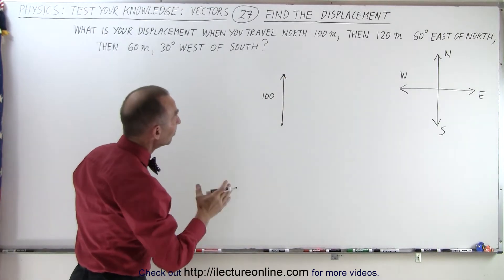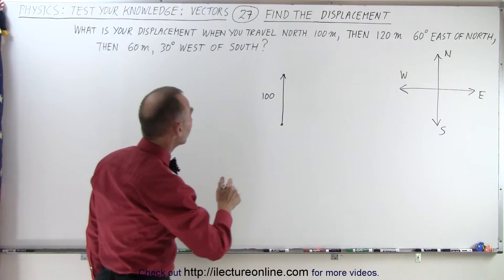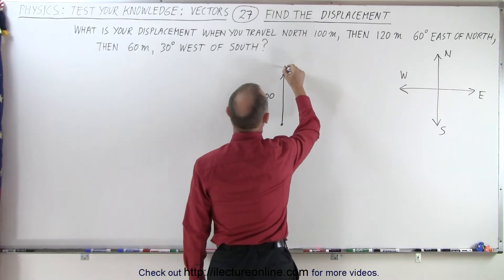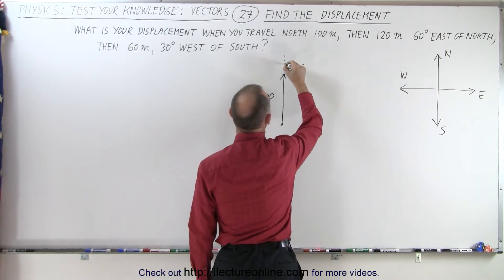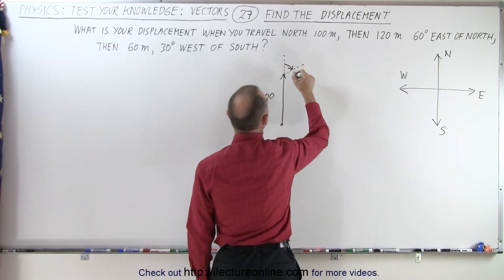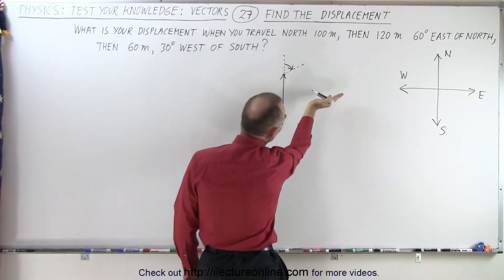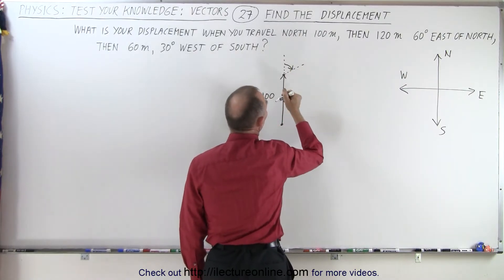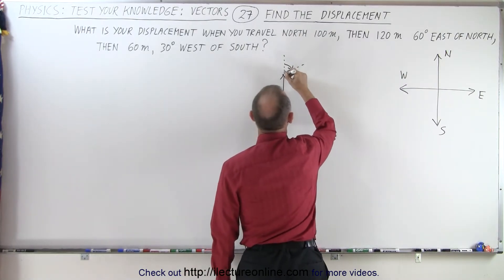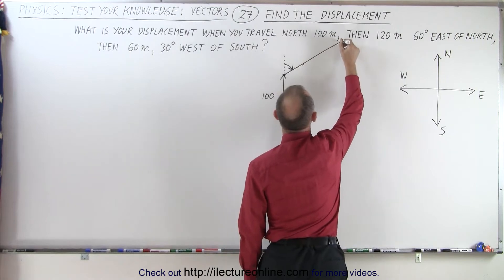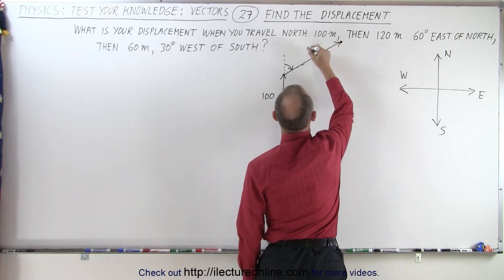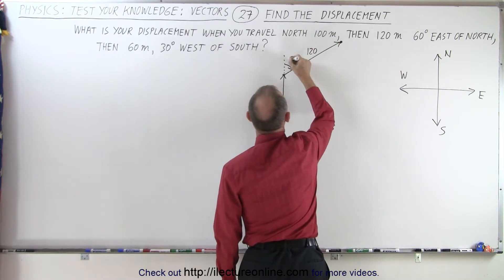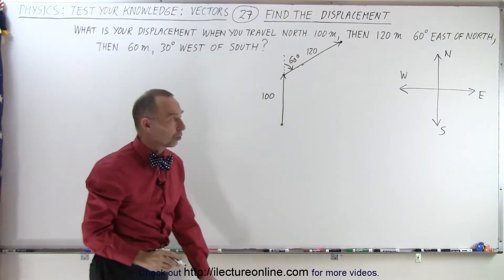Next it's 60 degrees east of north, so if north is this way, then 60 degrees is this way. So it's an angle of 60 degrees like this, east, in the east direction from the northern reference point, and that will then be a travel of 120 meters, which is therefore in this direction. So there's 120 meters, and this angle is 60 degrees relative to the north.